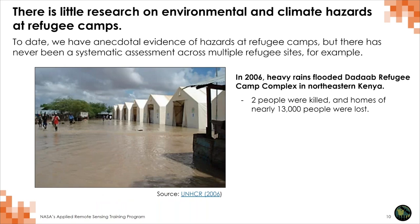However, there's little research on environmental and climate hazards at refugee camps. A lot of the evidence is anecdotal — it's localized event by event. We don't have a systematic assessment across multiple refugee sites across decades. In 2006, heavy rains flooded the Dadaab refugee camp complex in northeastern Kenya — two people were killed and about 13,000 people's homes were lost. In 2017, the same camp was affected by another flood that directly impacted 63,000 refugees. In 2014, the Liutkir refugee camp in Ethiopia was flooded, forcing the relocation of 40,000 refugees.